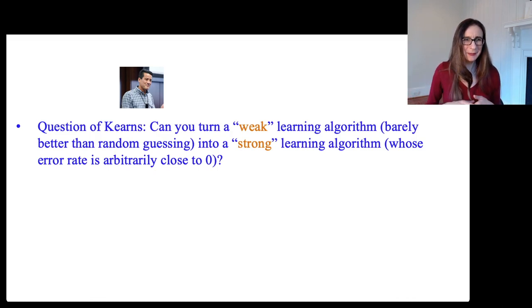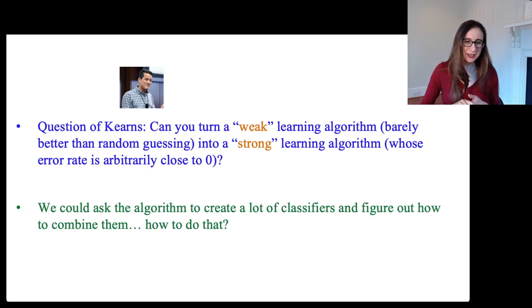And so you might be thinking, how could you do that? Well, the idea he was getting at is that maybe you could send a whole bunch of different things into the weak learning algorithm and have it produce a lot of classifiers and figure out how to combine them. But how do you do that? What input would you put into this weak learning algorithm and how do you combine the outputs to form something that's better?